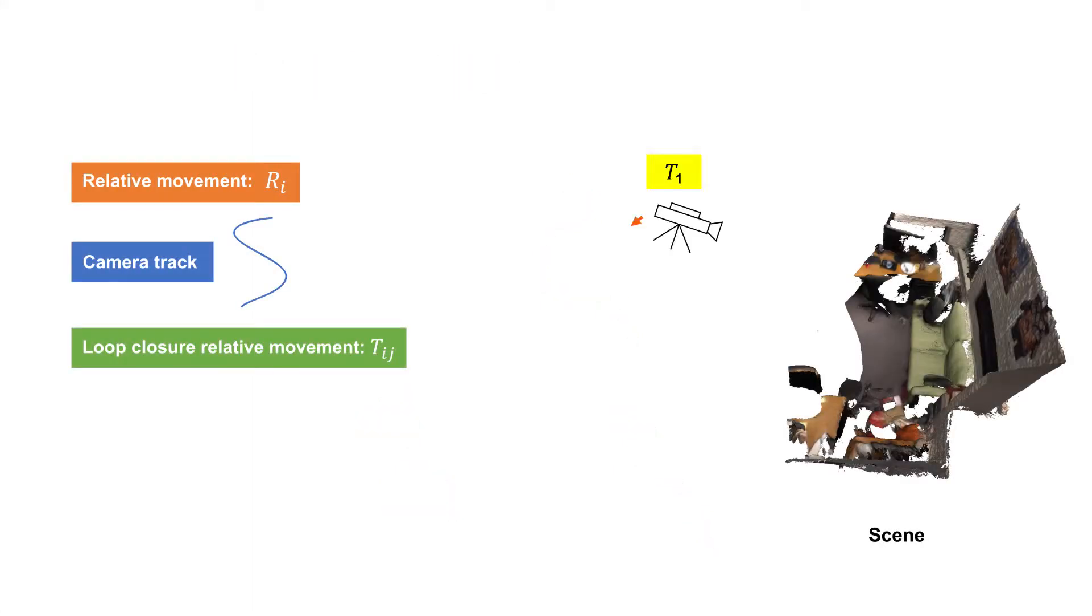Besides registering consecutive frames, it is important to also register some keyframes which are not consecutive. Non-consecutive frame registration is necessary in order to prevent drift and keep the reconstruction consistent.